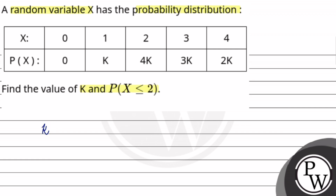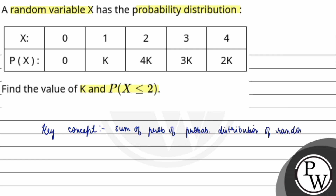Let's see how we solve this question. When we solve this question, we need some key concepts. We need to know that the sum of probabilities of a probability distribution of a random variable is 1. If we know this, this question will be very easily solved.